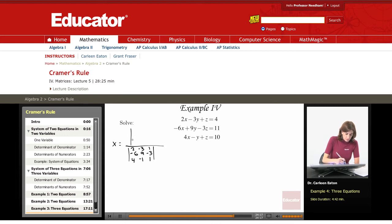In the numerator, I'm looking for x, so I'm going to keep the y and z columns just as they were. And I'm going to go over here to the x area and substitute the constants 4, 11, and 10.